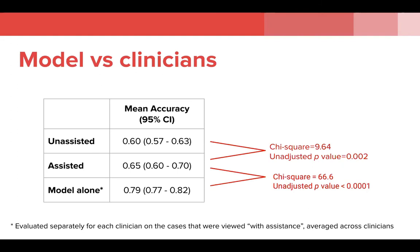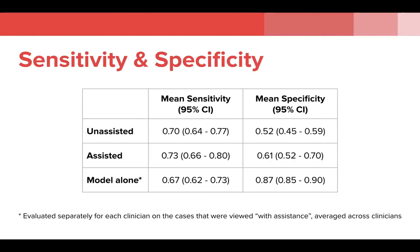The model alone was able to achieve an accuracy of 79%, significantly outperforming the assisted clinicians. However, this was driven largely by a large increase in specificity, though this was a post-hoc analysis and not assessed for statistical significance. In fact, the model was very slightly less sensitive than both unassisted and assisted clinicians, possibly representing clinicians' understandable reluctance to let cases go undetected and untreated.